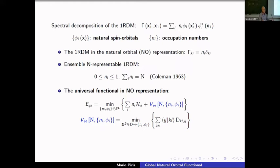The constrained-search formalism demonstrates the functional exists, but for practical applications it is only exploitable in special cases such as lattice systems with translational symmetry. In general, this constrained search is not appropriate for computation, so we must settle for approximations. We normally use the representation in which the one-particle matrix is diagonal — the spectral decomposition — where the eigenfunctions are the natural orbitals and the eigenvalues are the occupation numbers.